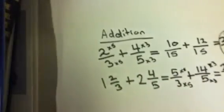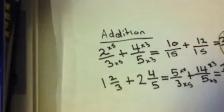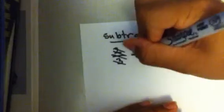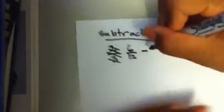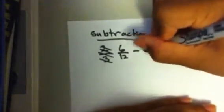Now we're going to go on to subtraction. But if you have any questions about addition, which I'm sure many of you do, just ask me below in the comment section. So now we're going to go on to subtraction. Subtraction is fairly the same as addition. So let's say you have the equation 6 over 12 minus 3 over 12.